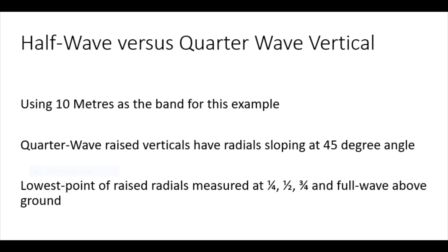And as we'll see in a minute for the ground mounted version, the number of radials will be a lot more than that. The lowest point of those raised elevated quarter wave antennas, the lowest point of those radials will be at a quarter, a half, three quarters or a full wave above the ground. So basically the lowest point of that antenna, the lowest tip of each radial, is at least at the same height as the equivalent height of the half wave that we're comparing it against in terms of the feed point of the half wave antenna.